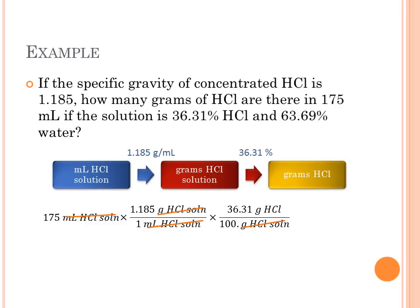Regardless, the HCl solution cancels, leaving us with grams of HCl. We multiply that out, we get 75.3 grams of HCl contained in that 175 milliliters of 36.31% HCl.